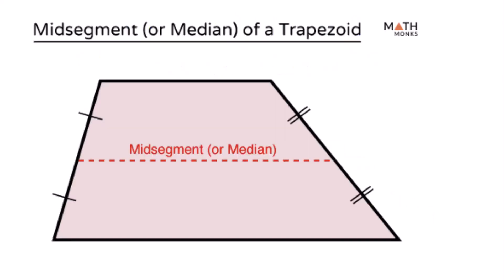Let's get into the mid-segment. So the median, first of all, is a segment that connects the midpoints of each leg of a trapezoid. The mid-segment is a segment joining the two midpoints of two sides of a triangle. So pretty much the same, but that is what a median looks like.